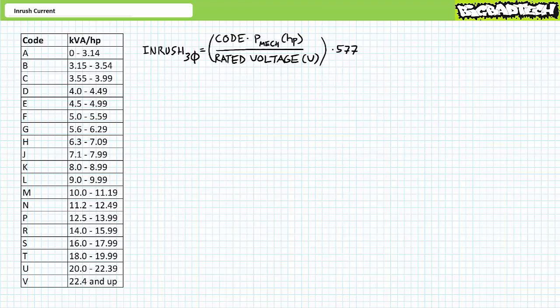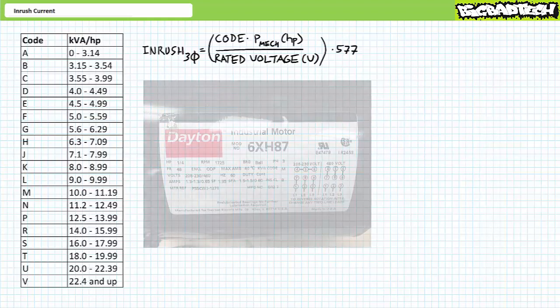Note the letters in the locked rotor code table go from A to V and do not include the letters I, O, and Q, as these letters might be easily confused for other data and entry headings in the motor nameplate.